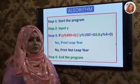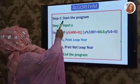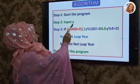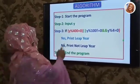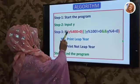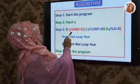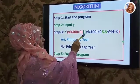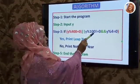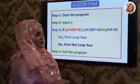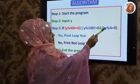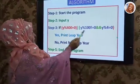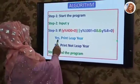Algorithm: Step 1 — start the program. Step 2 — input year, where Y is year. Step 3 — if this condition: Y mod 400 equals 0, OR Y mod 100 not equals 0 AND Y mod 4 equals 0.